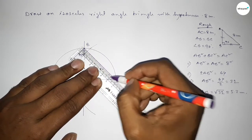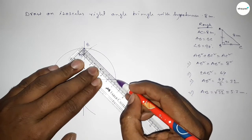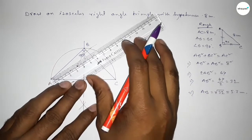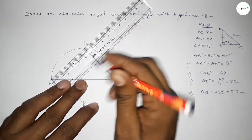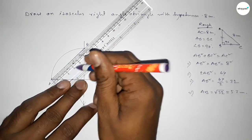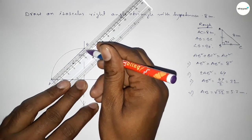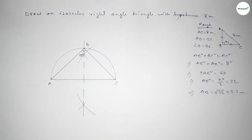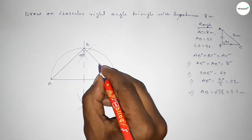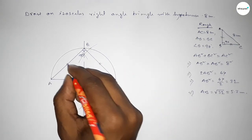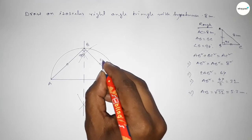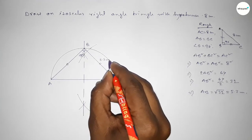Measuring BC — one, two, three, four, five — this is 5.7 centimeter. Now checking AB — one, two, three, four, five, seven — this is also approximately 5.7 centimeter.